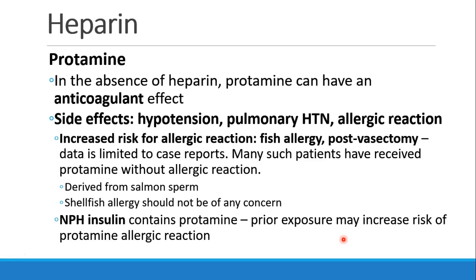You must know the side effects of protamine: hypotension, pulmonary hypertension, and allergic reaction. Certain patients are at increased risk for an allergic reaction to protamine, including patients who have a fish allergy and patients who've had a vasectomy. This data is limited to case reports, and many patients in these categories have received protamine without an allergic reaction. We think some mechanism of this allergy comes from the fact that protamine is derived from salmon sperm. Patients who have a shellfish allergy should not be any concern when administering protamine. Also, NPH insulin contains protamine — that's what the P in NPH stands for — so patients exposed to that insulin may have an increased risk of protamine allergic reaction due to prior sensitization.